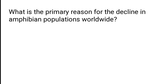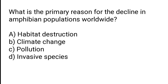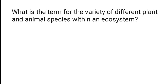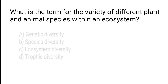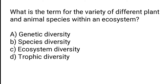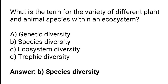What is the primary reason for the decline in amphibian populations worldwide? A) Habitat destruction, B) Climate change, C) Pollution, D) Invasive species. The correct answer is option C — pollution is the primary reason for the decline in amphibian populations worldwide. Species diversity is the term for the variety of different plant and animal species within an ecosystem.